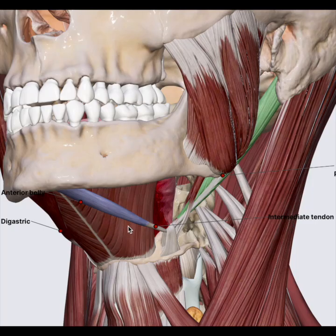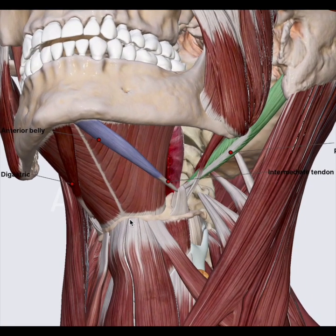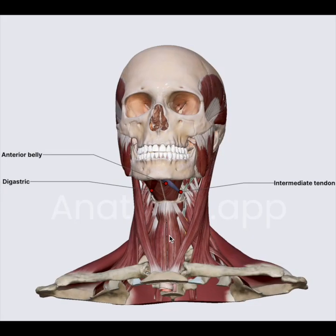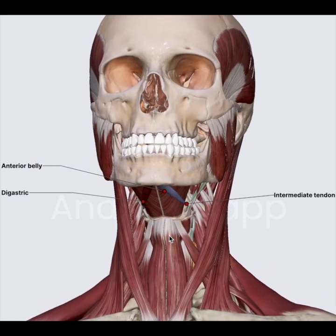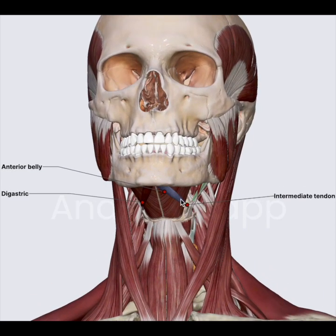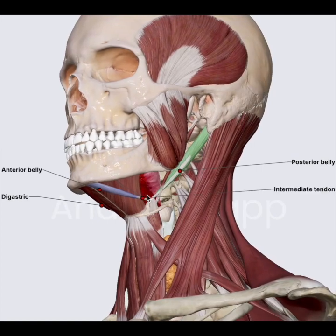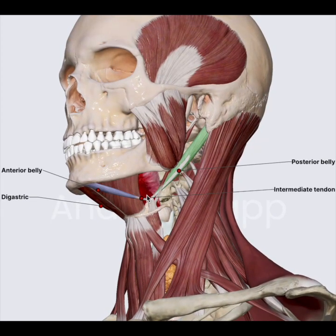So that's your digastric muscle. The digastric, and in general all the suprahyoid muscles, have a common function: they help during swallowing, chewing, and speech. They also help in elevation of the hyoid bone and pull the mandible down, which opens the jaw. This will happen when the hyoid is fixed.